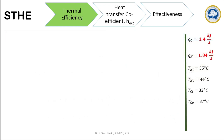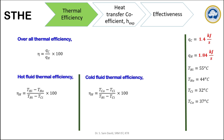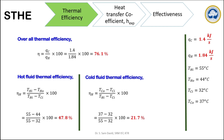To find the overall thermal efficiency, we are listing out all the data which we have so far. We have the inlet and outlet temperatures and the heat exchanged by the cold fluid and hot fluid. To find the thermal efficiency, we can use these formulas. As we have all the data, we can substitute and calculate the corresponding efficiencies. We can see that the thermal efficiency comes around 76.1%.